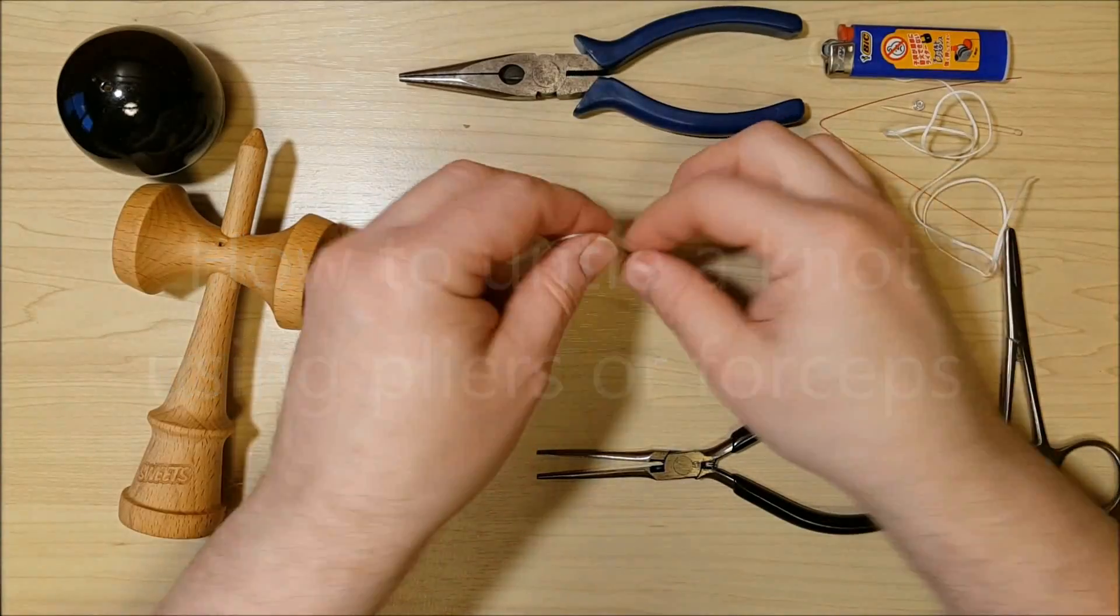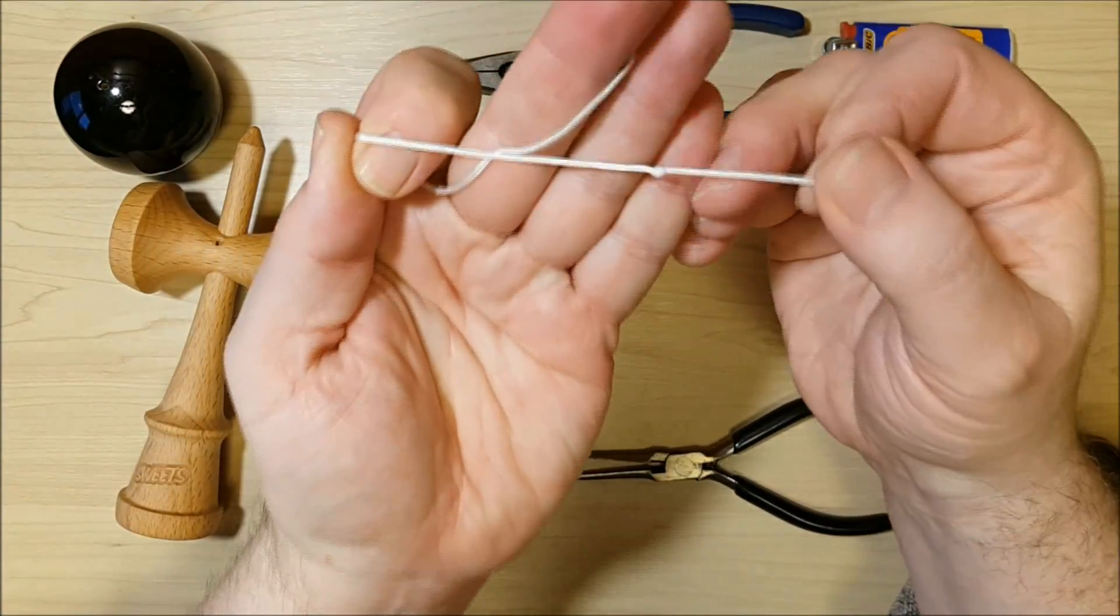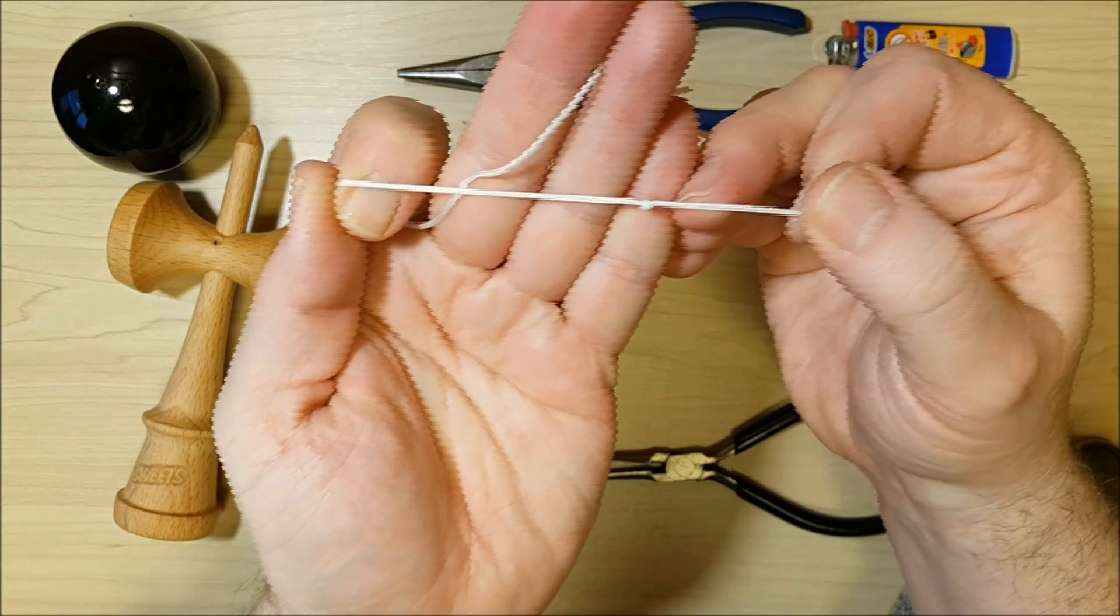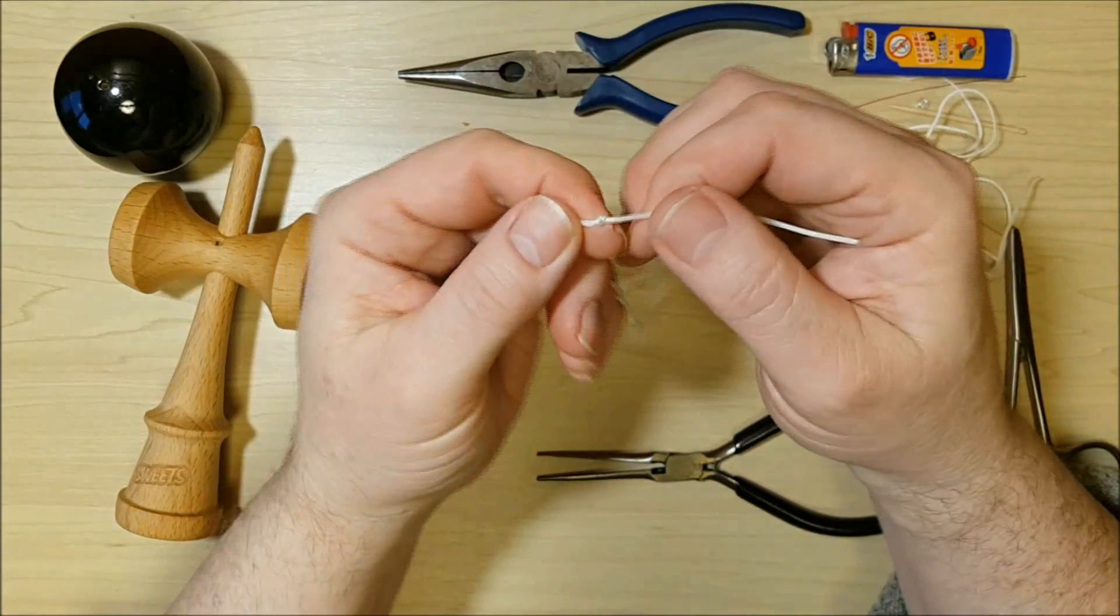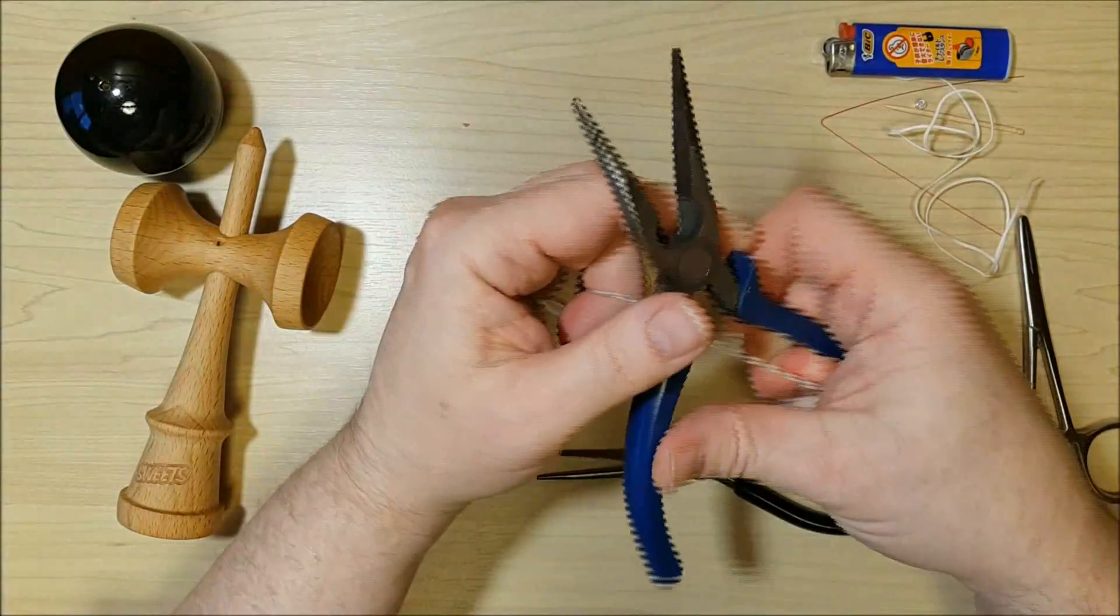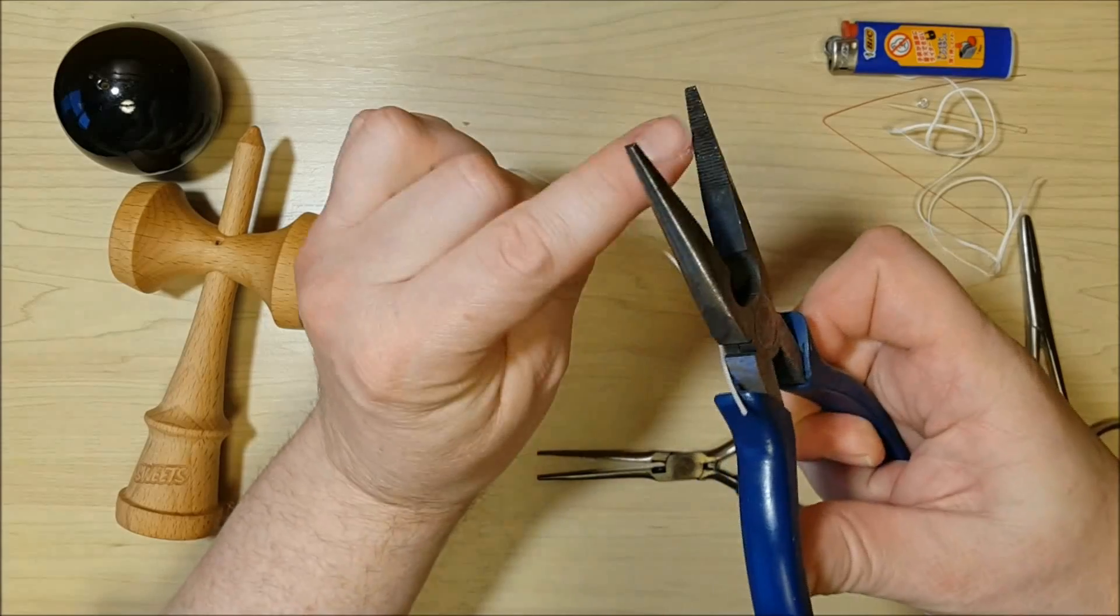This is a video on how to untie a knot using pliers or forceps. Use the flat area on the jaws of the pliers to avoid damaging the string. The flat area may be in a different location depending on the tool.